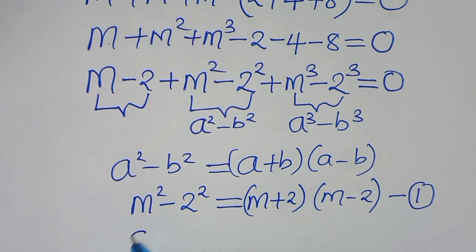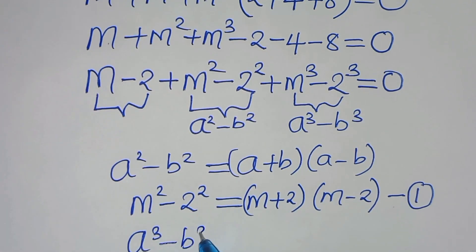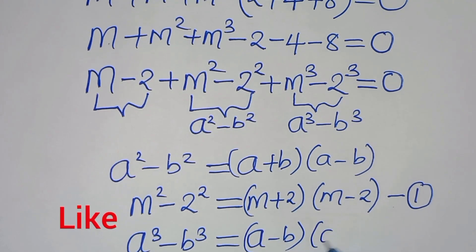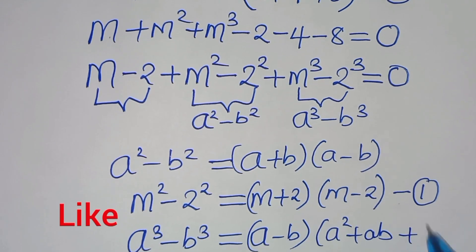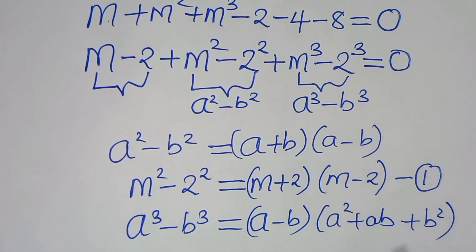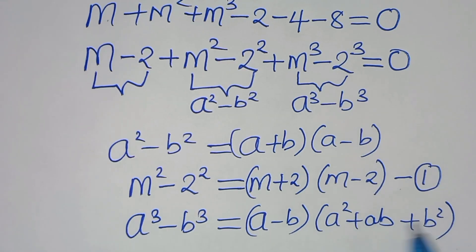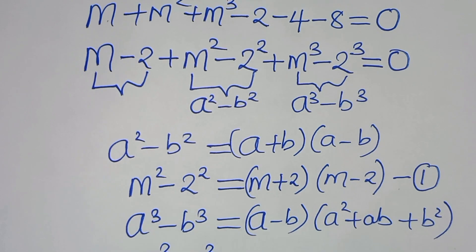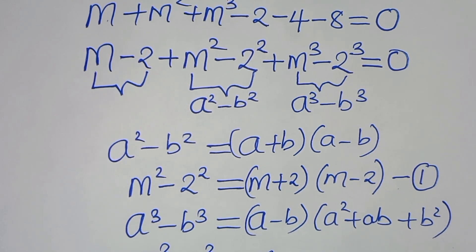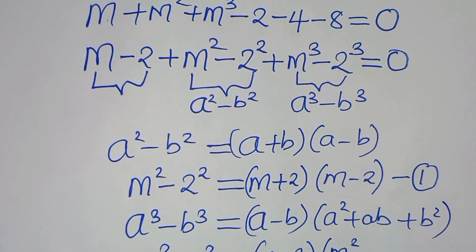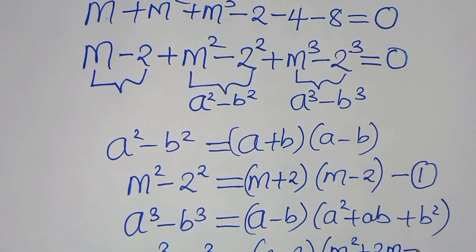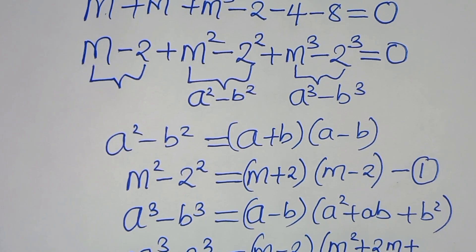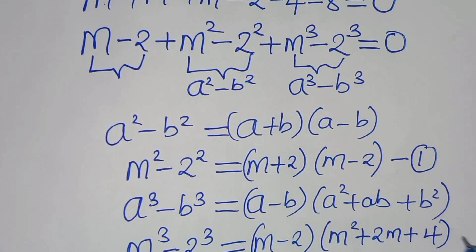Then we have a cubed minus b cubed, which equals (a minus b)(a squared plus ab plus b squared). Applying this identity, m cubed minus 2 cubed equals (m minus 2)(m squared plus 2m plus 4). Let's call this equation 2.